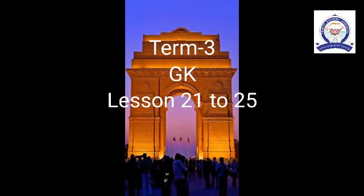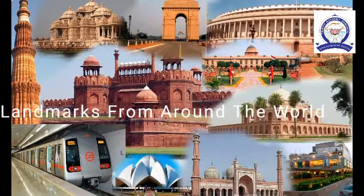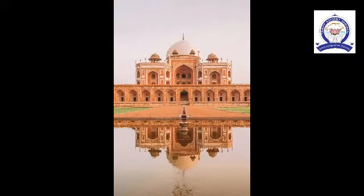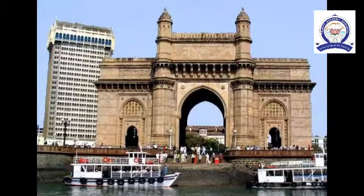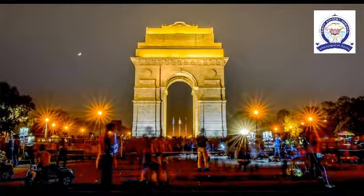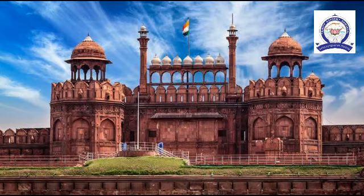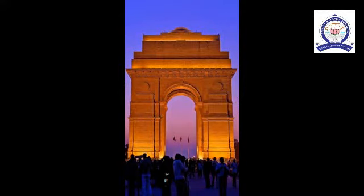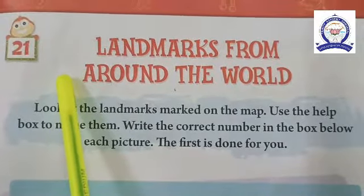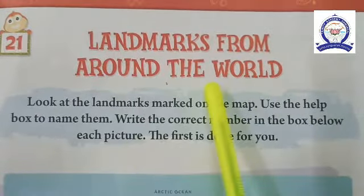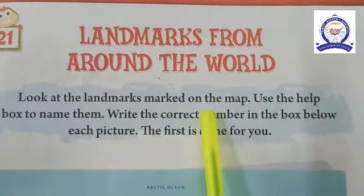Term 3 GK Lesson 21 to 25. Landmarks from around the world. A landmark is an object or a feature of a landscape or town that has importance or makes a place easily recognizable. There are landmarks across the world that hold great importance. In this lesson, you will learn about the most well-known landmarks of the world. Lesson 21: Landmarks from around the world — look at the landmarks marked on the map.